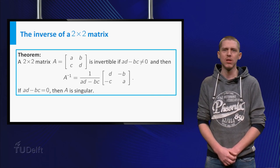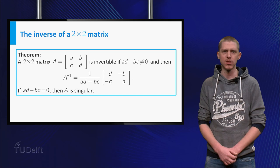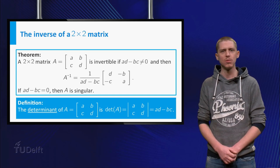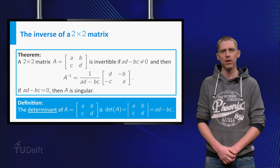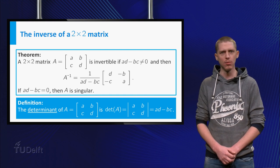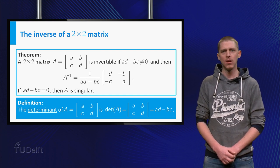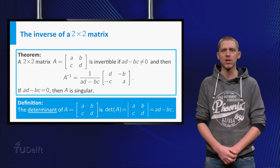If a times d minus b times c is zero, A is singular. Because a times d minus b times c is an important number, we define this number as the determinant of A. Now you know when a 2 by 2 matrix has an inverse.